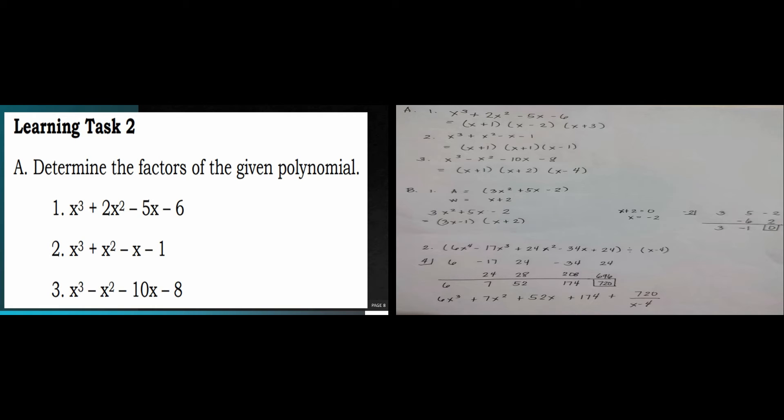Let's have Learning Test 2, wherein we're going to determine the factors of the given polynomial. The first one is x cubed plus 2x squared minus 5x minus 6, and the factors are x plus 1, x plus 2, and x plus 3. For number 2, we have x cubed plus x squared minus x minus 1, and the factors are x plus 1, x plus 1, and x minus 1.